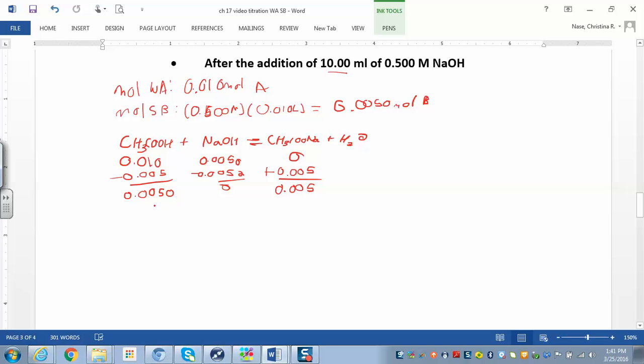I have my weak acid and my base. I'll use the Henderson-Hasselbalch equation to find the pH. pH equals pKa, which was 4.74, plus the log of base over acid: 0.005 divided by 0.005.